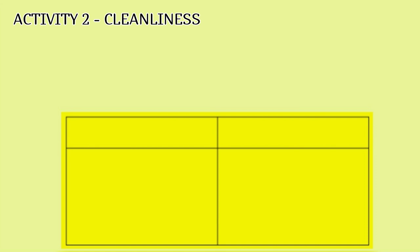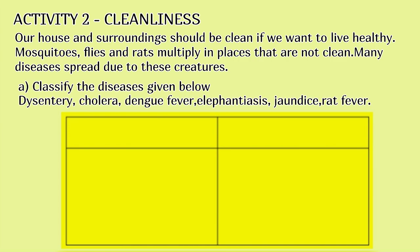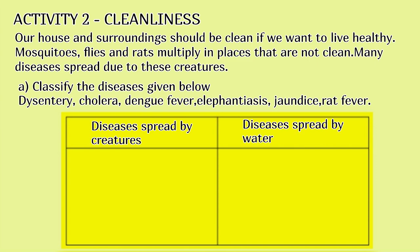Activity 2: Cleanliness. Our house and surroundings should be clean if we want to live healthy. Mosquitoes, flies and rats multiply in places that are not clean. Many diseases spread due to these creatures. A. Classify the diseases given below: Dysentery, Cholera, Dengue Fever, Elephantiasis, Jaundice, Rat Fever — into diseases spread by creatures and diseases spread by water.